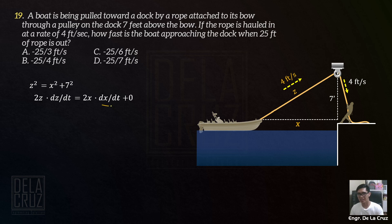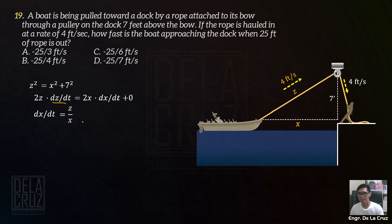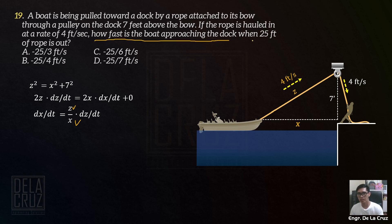What is asked here is the dX over dT — yung movement ng boat towards the dock. So we can cancel the 2. That means the dX over dT here — meron pa tayong Z dito — that will be Z over X at that moment, times dZ over dT. Yung dZ over dT — yung movement dito — and that is 4 feet per second. So we just need to calculate for this dimension at that moment. How fast is the boat approaching the dock when 25 feet of rope is out? That means when Z is 25 feet.